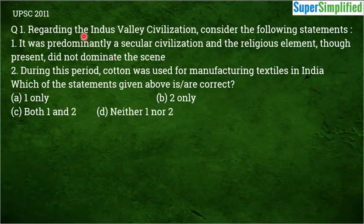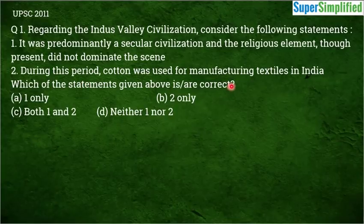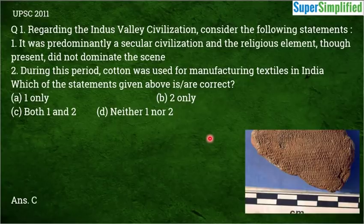Question number 1 is from UPSC Prelims 2011, regarding the Indus Valley Civilization. Consider the following statements: Statement 1 - it was predominantly a secular civilization and the religious element, though present, did not dominate the scene. Statement 2 - during this period cotton was used for manufacturing textiles in India. The correct answer is C, that is both 1 and 2.